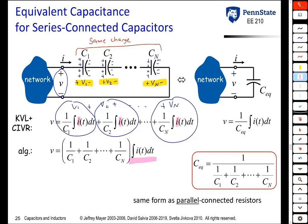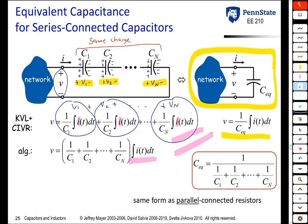If we wanted to replace those N series capacitors by a single equivalent capacitor, its voltage-current relationship must match, which means 1/C_equivalent equals 1/C1 + 1/C2 + ... + 1/Cn. Inverting both sides gives the final equation for capacitors connected in series: the equivalent capacitance is the reciprocal of the sum of the reciprocals of the individual capacitors. This is the same form as for parallel connected resistors — so capacitors in series combine like resistors in parallel, and capacitors in parallel combine like resistors in series.